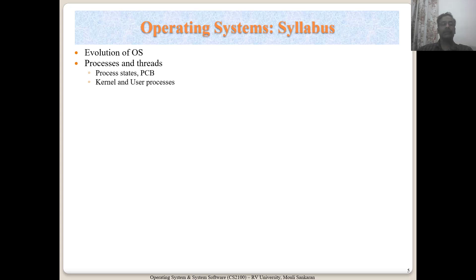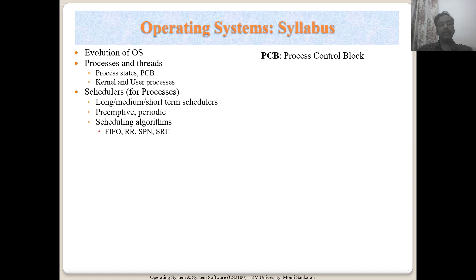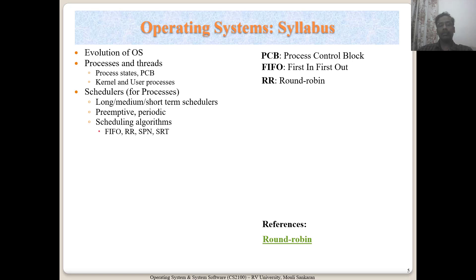We will start with the evolution of OS, cover topics on processes and threads, and what is PCB — Process Control Block. Then we get into different types of schedulers used by an OS, their functionalities, and a couple of scheduling algorithms. We will start with FIFO — First In First Out — then round robin, and Shortest Process Next, meaning the process that takes the shortest time to complete is taken first, so that processes complete as early as possible.